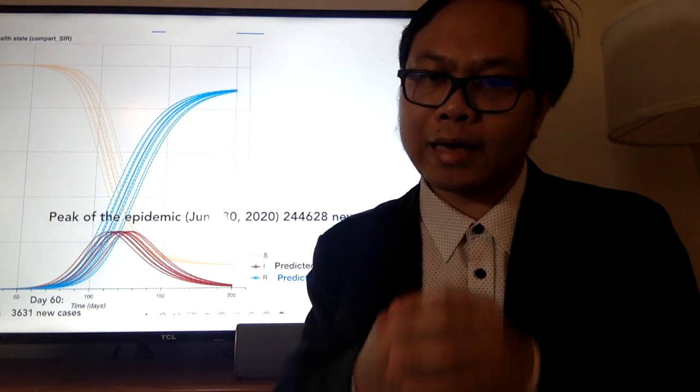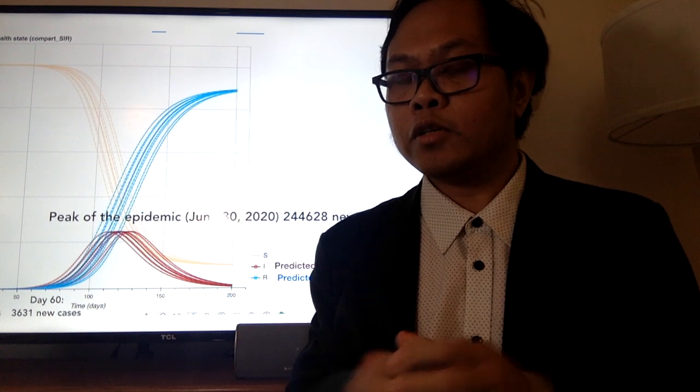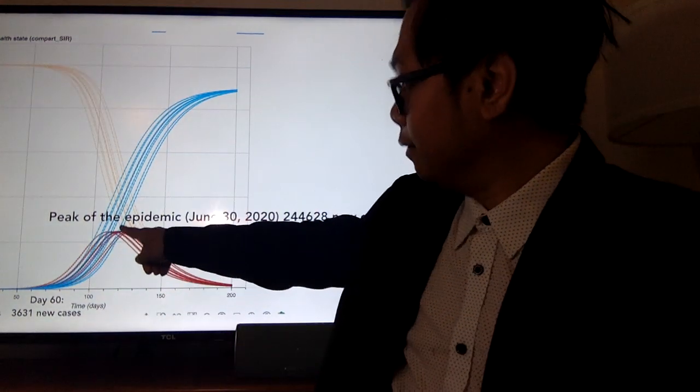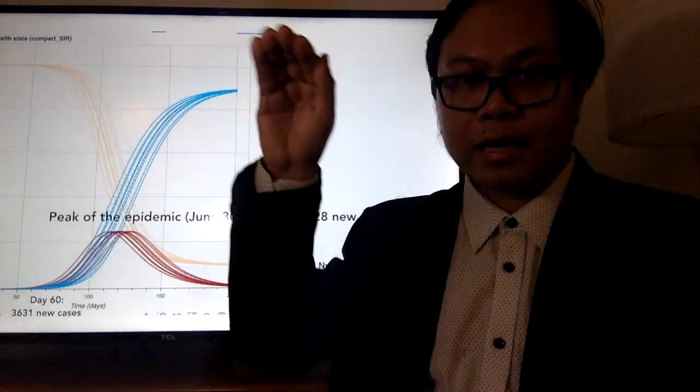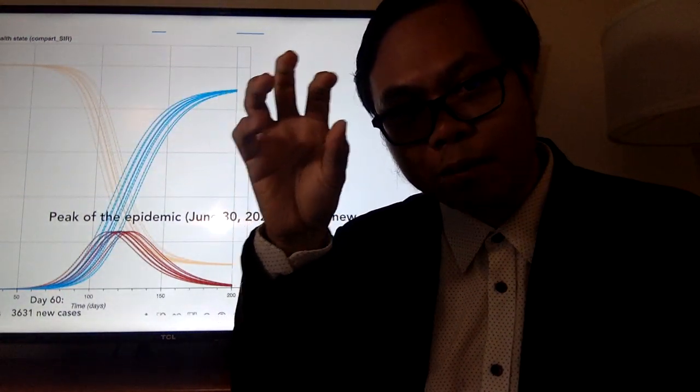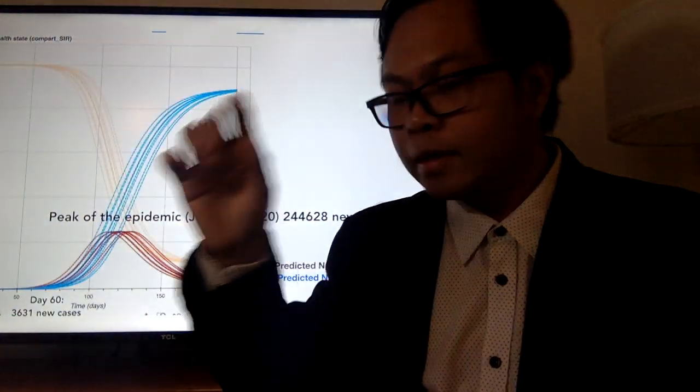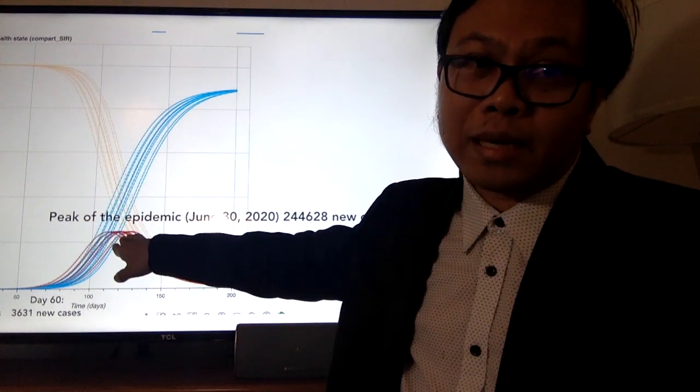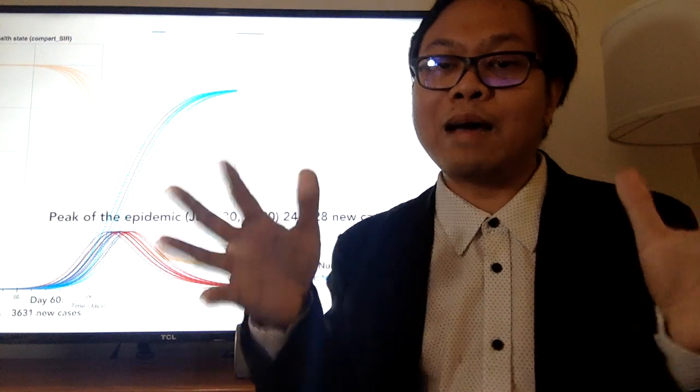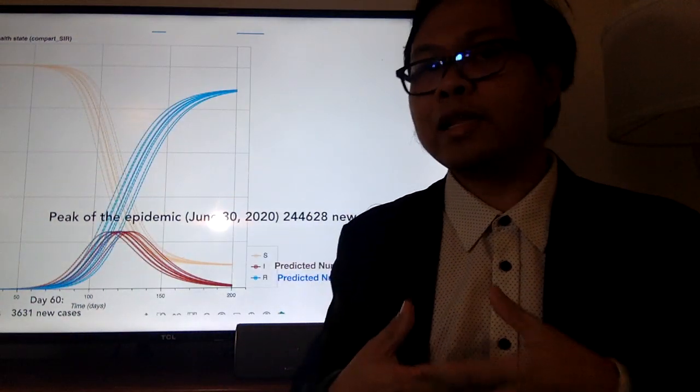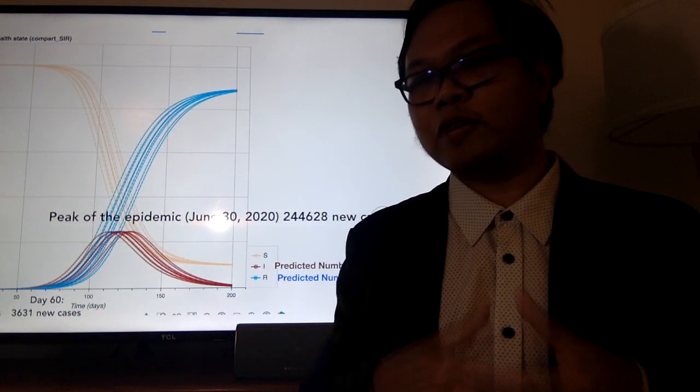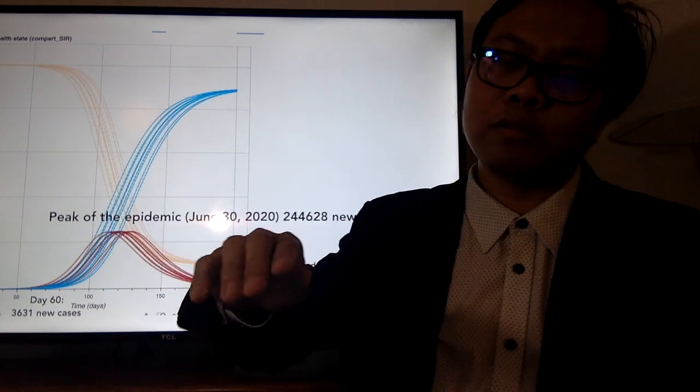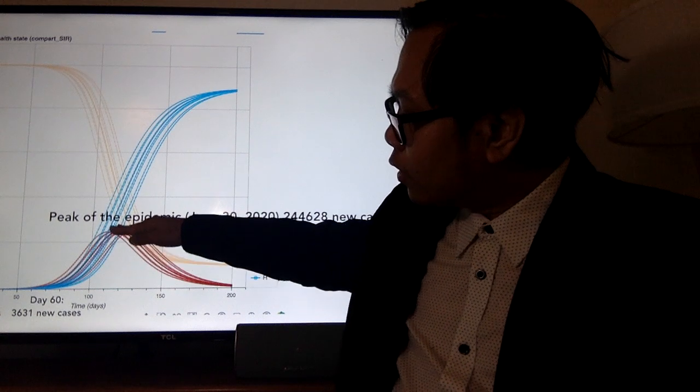Ang model na ginamit ko ay SIR model. Ito ay isang simple model para malaman natin kung kailan yung peak ng epidemic, kung kailan yung pinakamaraming number ng kaso niya, at kung kailan siya bababa. Nag-peak ang epidemic kasi may limited number lang ng tao na pwede magkasakit. Kumakalat ngayon sa social media yung campaign na to flatten the curve. Ang ibig sabihin nun, pabababain natin itong curve.